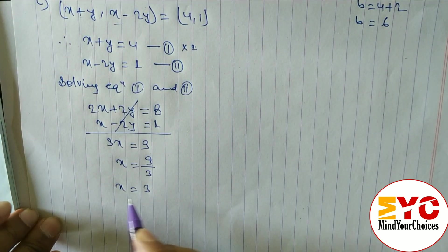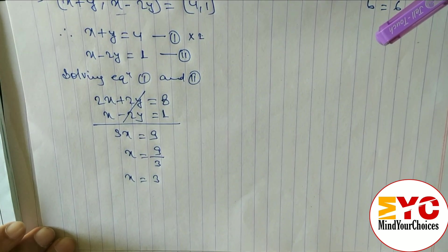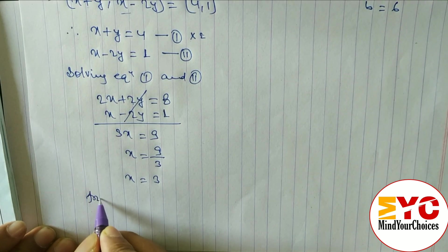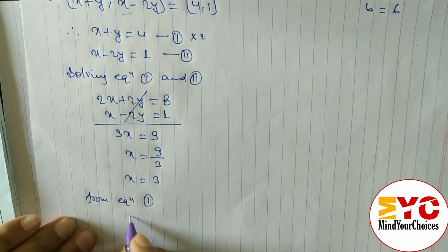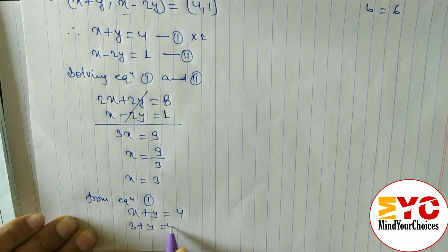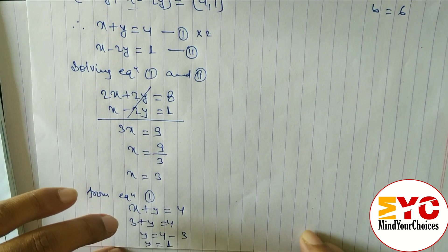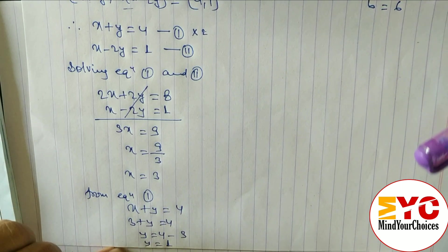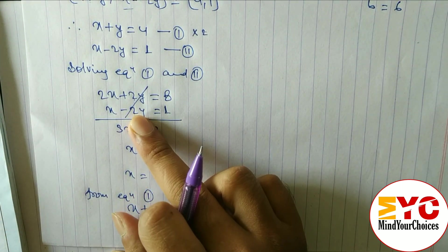Now find y by substituting x equal to 3 into equation 1: x plus y is equal to 4, so 3 plus y is equal to 4, giving y is equal to 1. So for question c, x is equal to 3 and y is equal to 1.